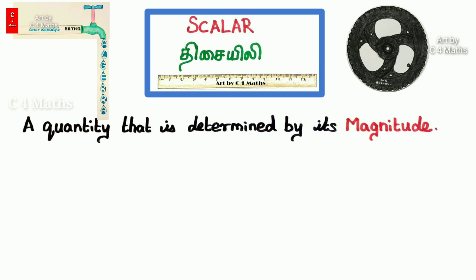Magnitude means a numerical value — that is the defining characteristic. If you can write down only a numerical value, it is a scalar.